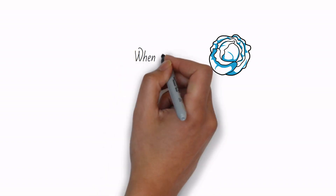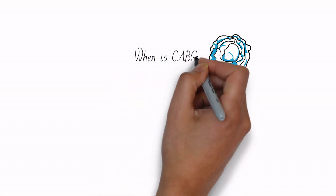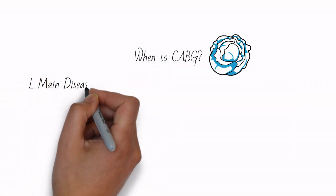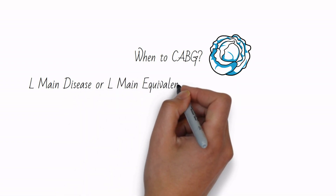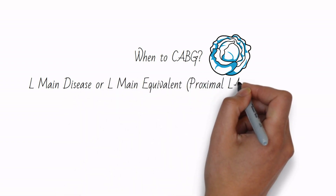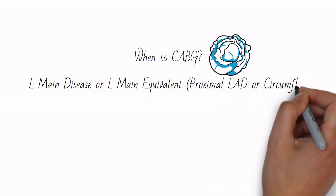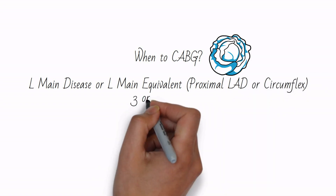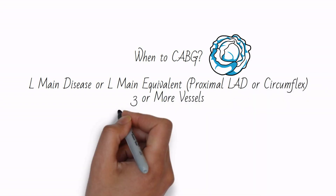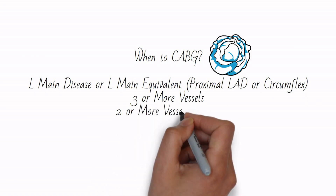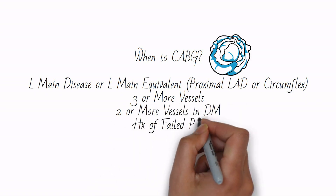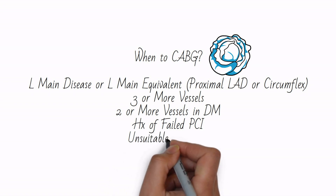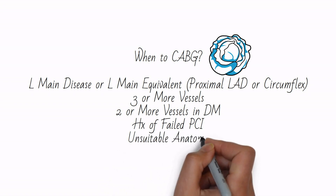Once in the cath lab, the first question is if the occlusion is in the left main coronary. If yes, go to emergent CABG, or coronary artery bypass grafting. If no, stent 1 to 2 vessel disease. If three or more occlusions exist, go to emergent CABG. Other indications for CABG include a history of failed percutaneous coronary intervention, or PCI, or unsuitable coronary anatomy.